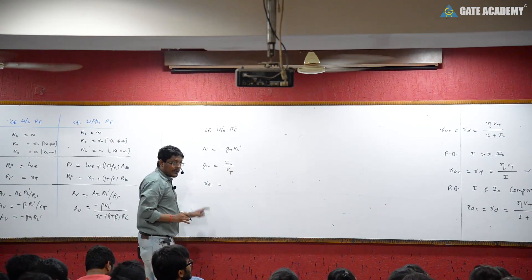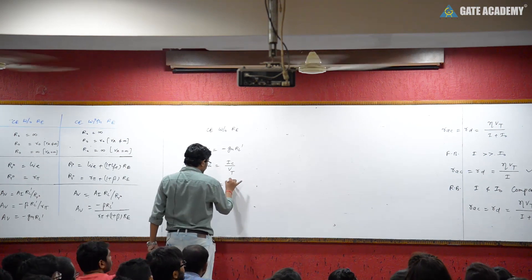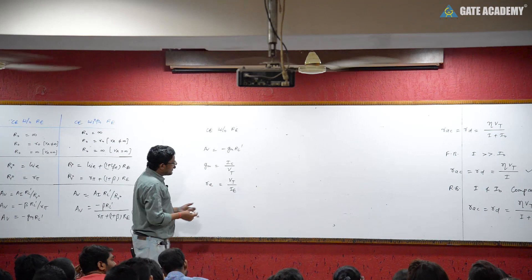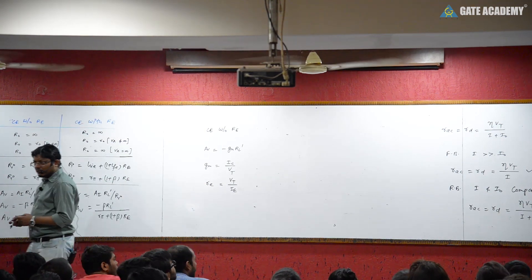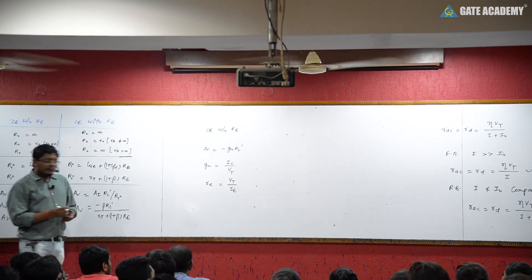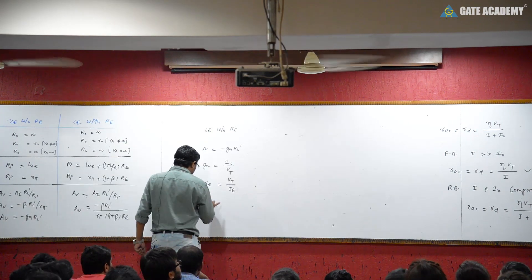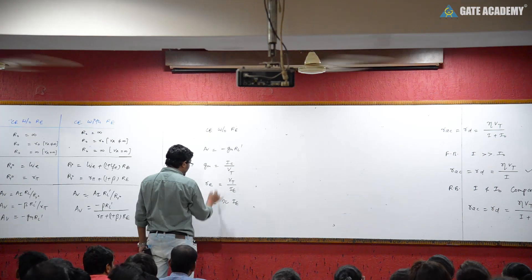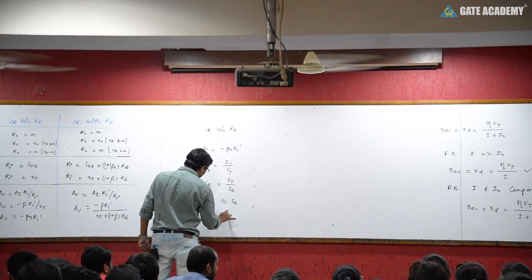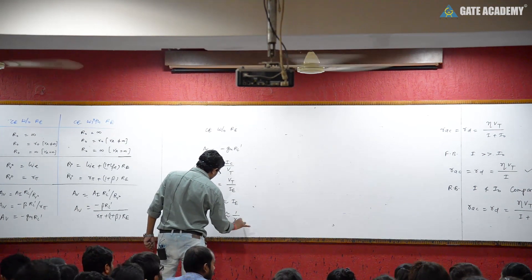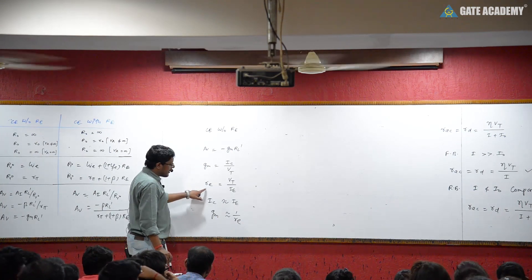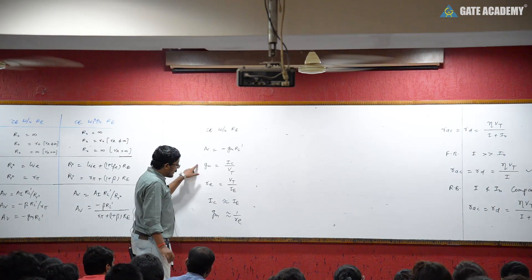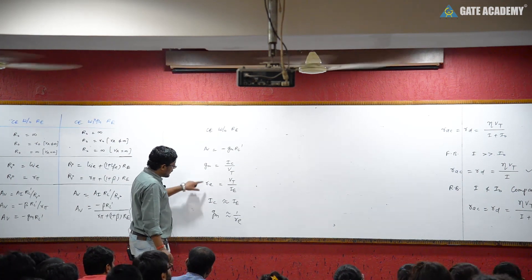Small r_e equals VT upon I_E. Since emitter current and collector current are approximately equal — about 98 to 99% — we know that collector current is approximately emitter current. Therefore G_M is approximately 1 upon r_e, because G_M is conductance and r_e is resistance, and both depend on the DC analysis.